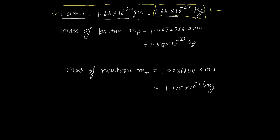Now you can calculate the mass of the proton: 1.007276 amu in terms of atomic mass unit, and in kilograms this is 1.672×10⁻²⁷ kg.